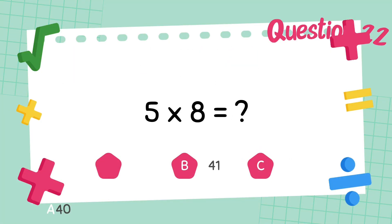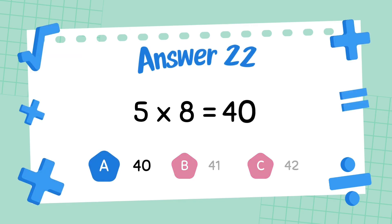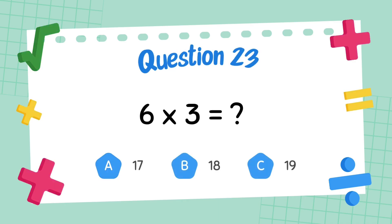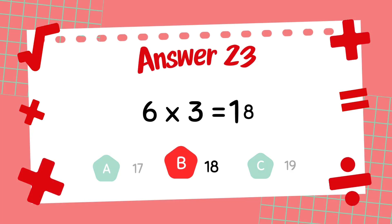What is five multiply eight? The answer is forty. What is six multiply three? The answer is forty.